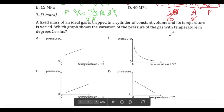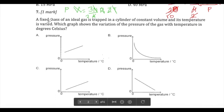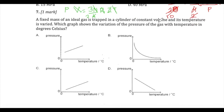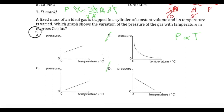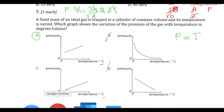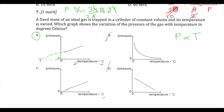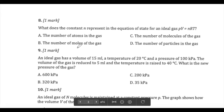Question seven: a fixed mass of ideal gas is trapped in a cylinder of constant volume and its temperature is varied. At constant volume, pressure is directly proportional to temperature, so it won't be B or D. Between A and C: the axes are in Celsius, so the graph cannot have a zero intercept. A zero intercept requires Kelvin, because zero Kelvin is absolute zero where pressure would be zero. Extrapolating shows a negative temperature intercept — so the answer is A.